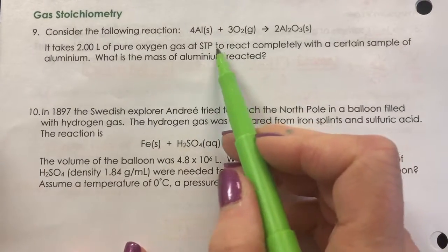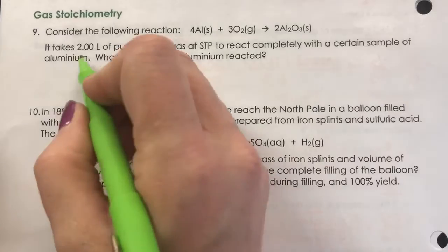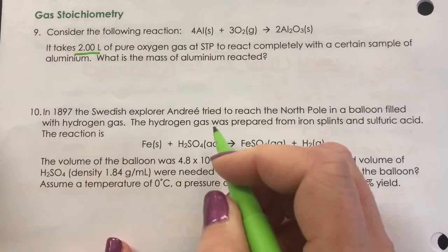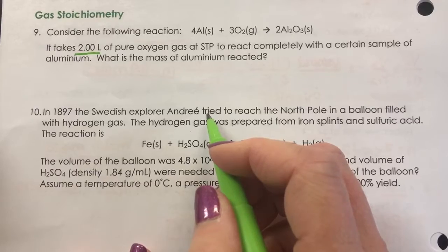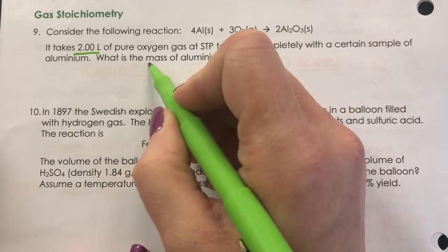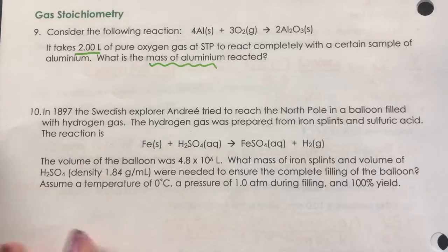We have a synthesis reaction between aluminum and oxygen. It takes two liters of pure oxygen at standard temperature and pressure to react with a sample of aluminum. What is the mass of aluminum that is reacted?